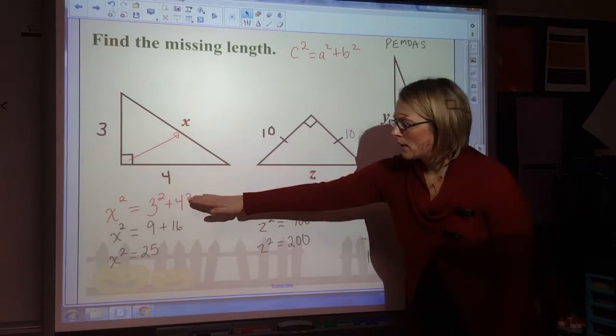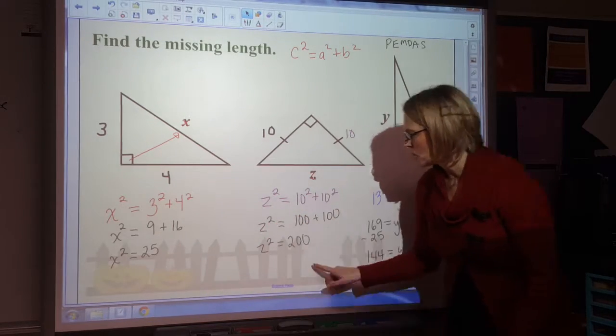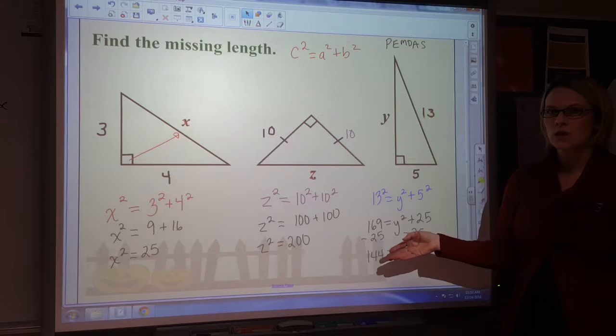Using the Pythagorean Theorem, we write our equation and get down to x squared equals 25. So now you need to figure out how to solve for the variable.